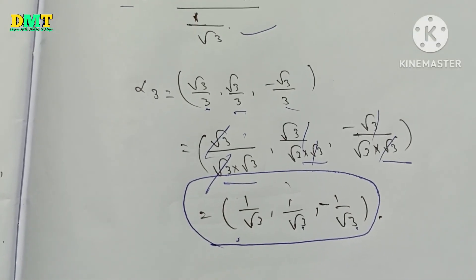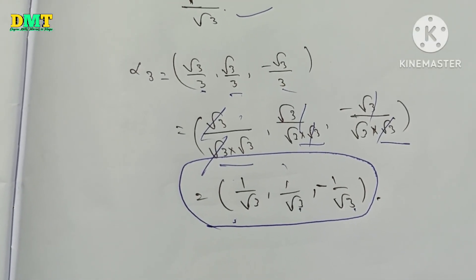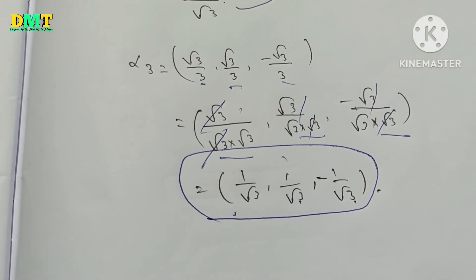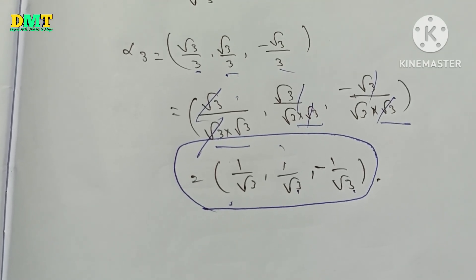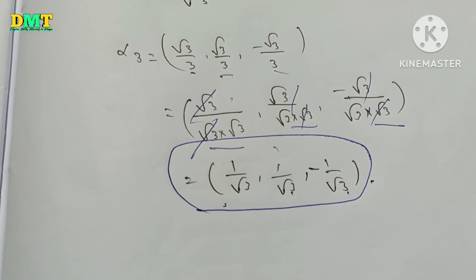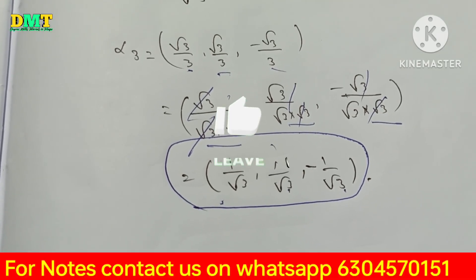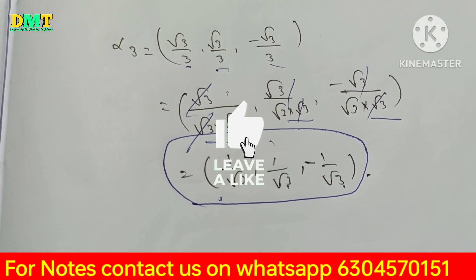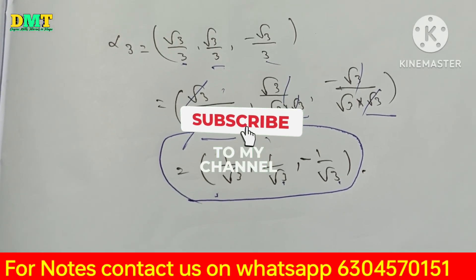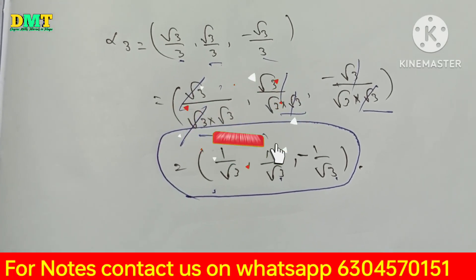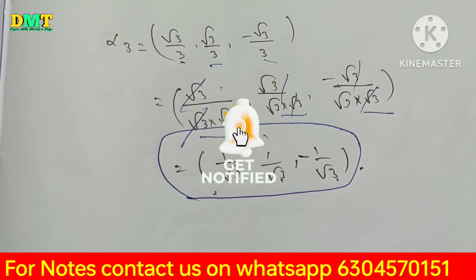I have alpha1, alpha2, alpha3. If you set these three values, it's a normal basis. So this is the solution. If you like this channel, share with your friends, subscribe, and press the bell icon. Thank you.